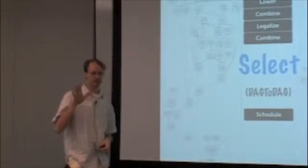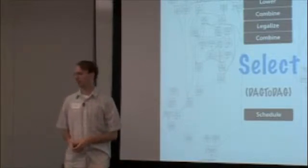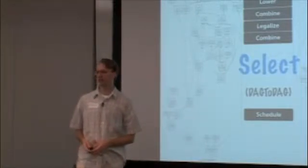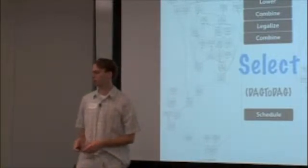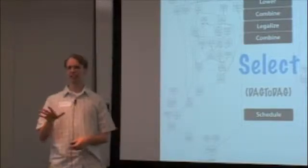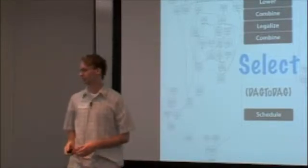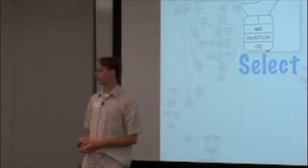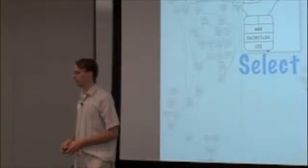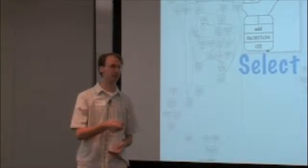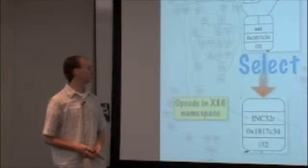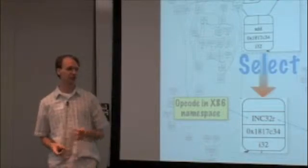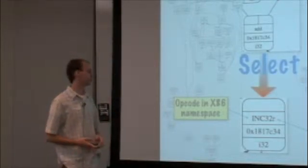Now that the graph has been legalized and simplified and canonicalized, now we're actually going into instruction selection proper. This is sometimes called DAG-to-DAG instruction selection in the source for historical reasons. I'm going to show a few examples of instruction selection in action. This is the add that does the loop control variable, it's just adding a variable by one. We're compiling for x86, so we select this to an INC instruction.